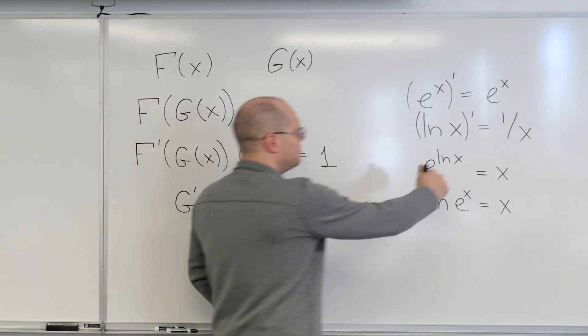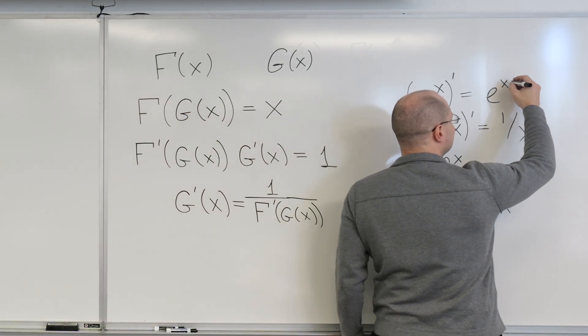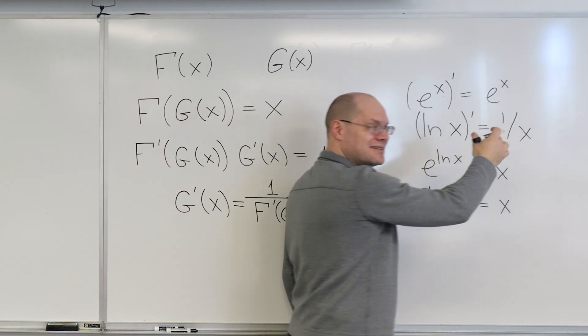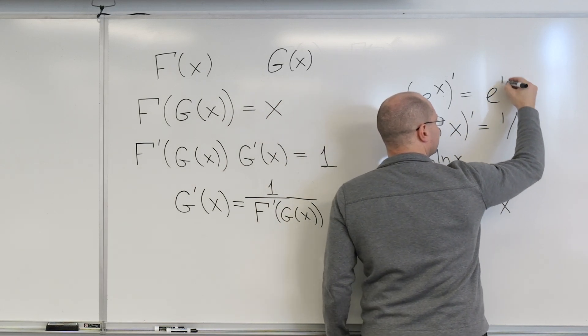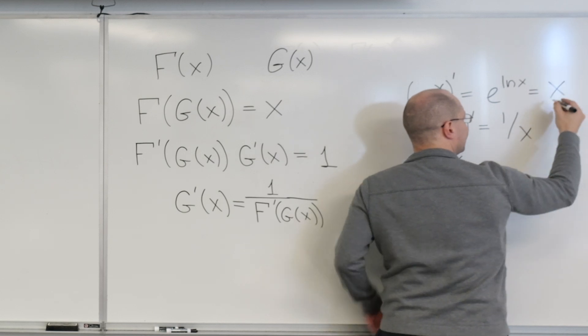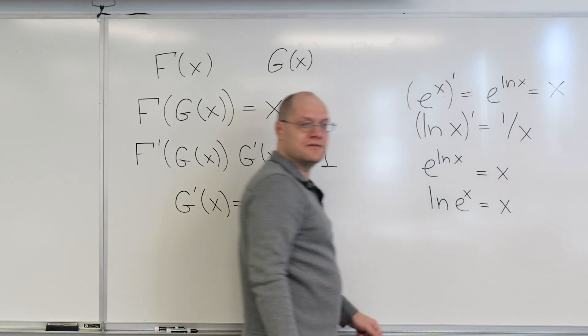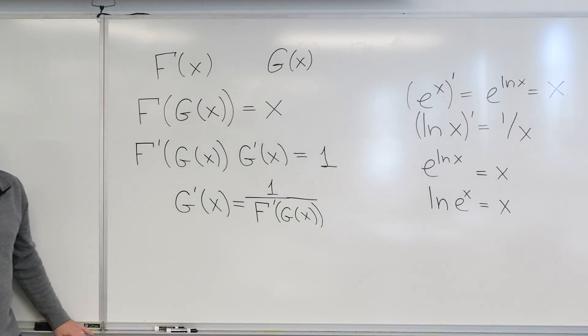So if I plug that in here, if instead of x, which is x, replace it with g of x, which is log of x, then I get x, and yes, indeed, they are the reciprocals of each other. Does that make sense? And you can try that with any pair of functions that are functional inverses of each other. So that's how this formula reads.